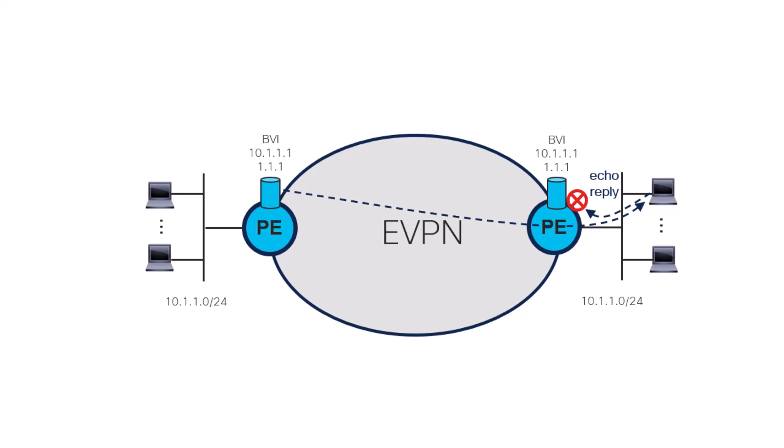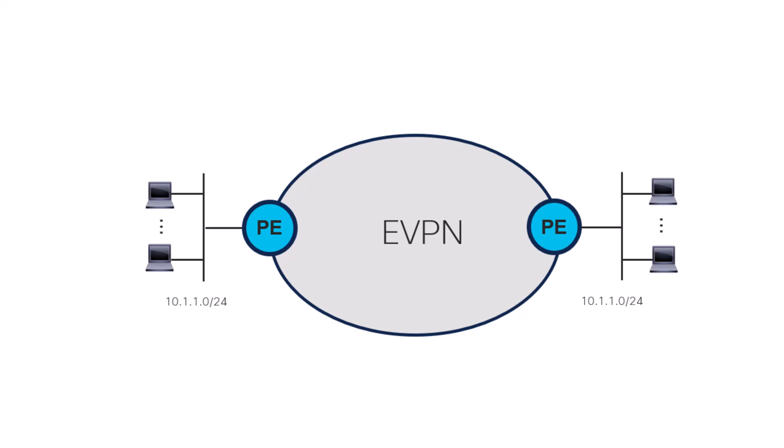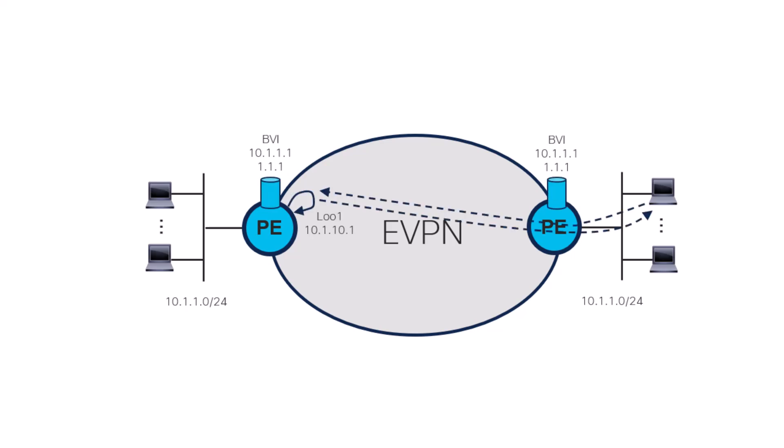So the first key takeaway is: when you need to check connectivity to a host, you always need to ping from its local PE. Now, if you need to check connectivity to a remote host — for example because you don't have access to the local PE of that remote host, or because you want to check the forwarding paths throughout the MPLS cloud — then you need to use a unique address in the VRF as the source address for the ping, such as a loopback address, so the local PE is able to route the echo reply back to you.